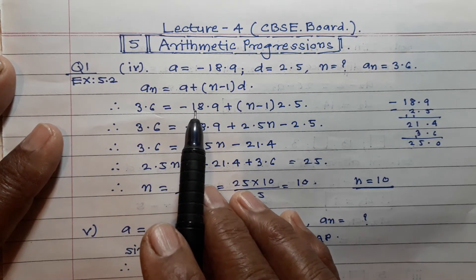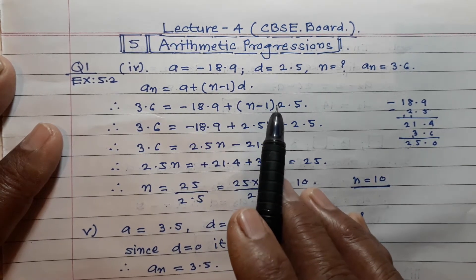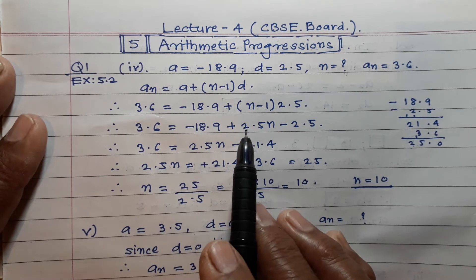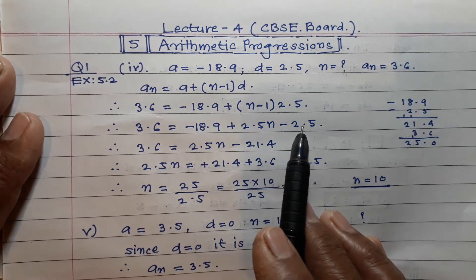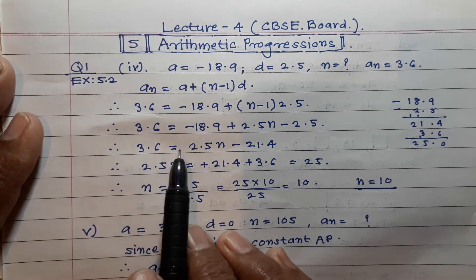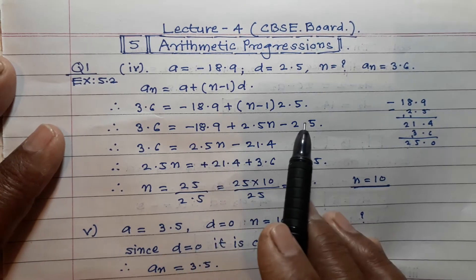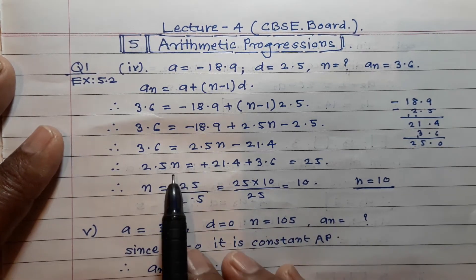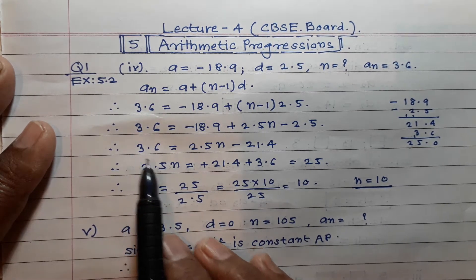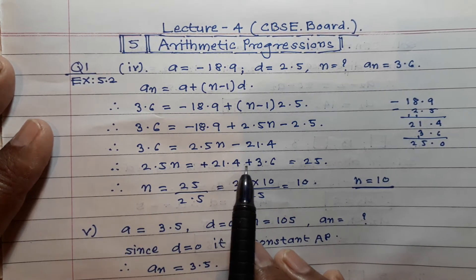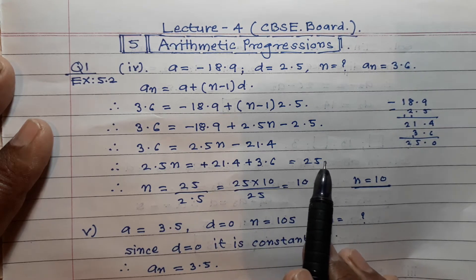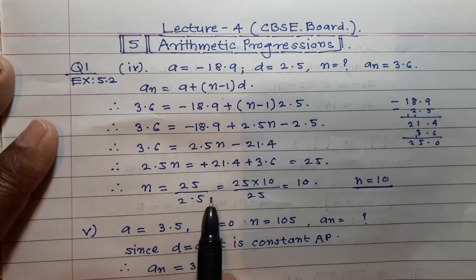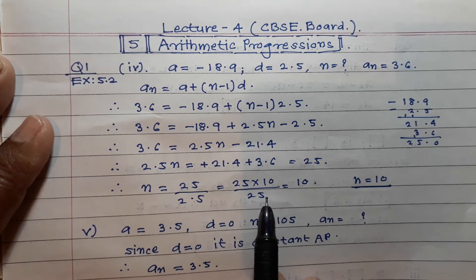Substituting: 3.6 = -18.9 + (n-1) × 2.5, which gives 3.6 = -18.9 + 2.5n - 2.5, so 3.6 = 2.5n - 21.4. Transferring terms: 2.5n = 21.4 + 3.6 = 25.